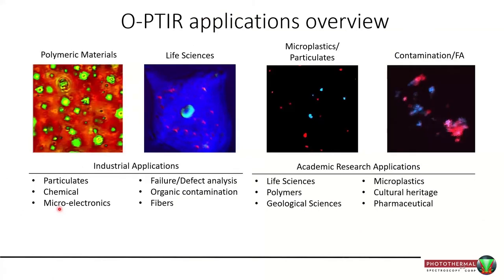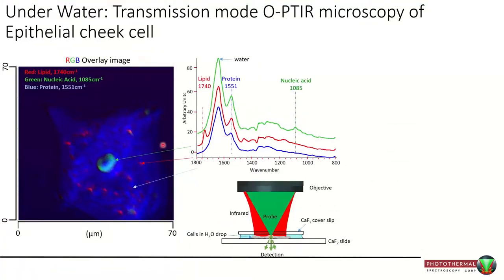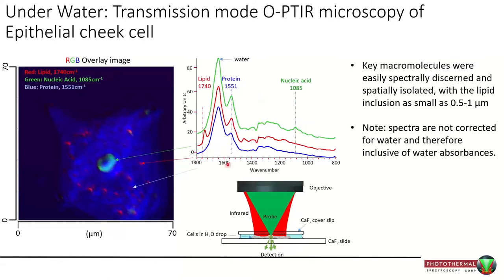There has been a phenomenal rise in publications, testament to what this instrument can do. An early example is a cheek cell measured in water — placed on a calcium fluoride slide with a drop of water and a calcium fluoride coverslip. Collecting spectra from a few points revealed interesting peaks, so the QCL was tuned to three wavenumbers and the sample scanned at only those frequencies. The RGB overlay looks almost like a fluorescence image, detecting lipid inclusions of half a micron to a micron, nucleic acid most prominent in the nucleus, and protein everywhere.